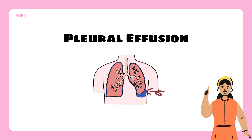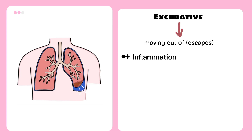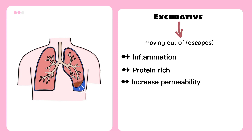Pleural effusions can be classified by two types. The first one is the exudative. Exudate, meaning moving out of, is a fluid buildup caused by inflammation, leading to leakage of thin cells and other serum constituents. It is an extracellular fluid with a high protein content that has diffused from the blood circulation out of the interstitial space, caused by local factors that increase permeability of the blood vessels.